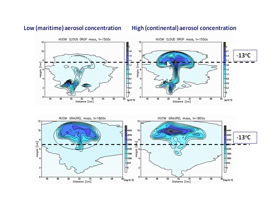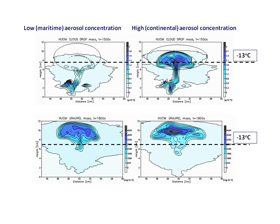Clouds that develop in polluted air contain a significant amount of supercooled water above. If we compare the coexistence of graupel and liquid water in a clean maritime atmosphere versus a polluted atmosphere, we see that at temperatures below minus 13°C, polluted clouds have co-existence of significant amounts of graupel, supercooled water, and ice crystals — conditions favorable for formation of lightning.